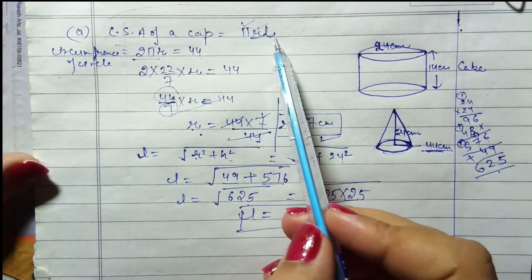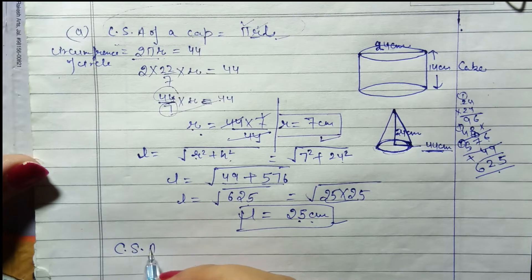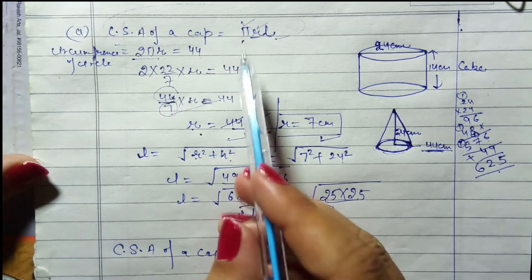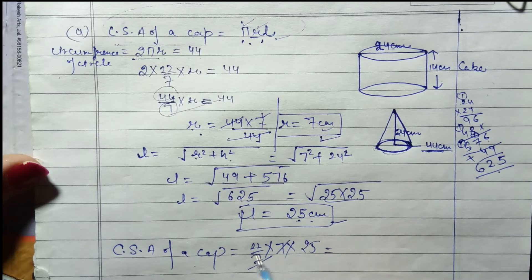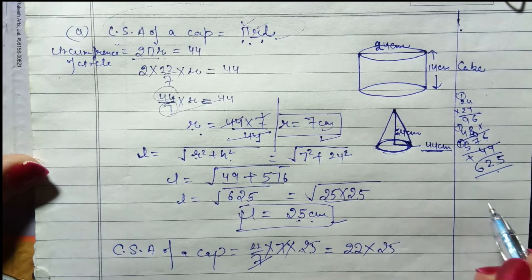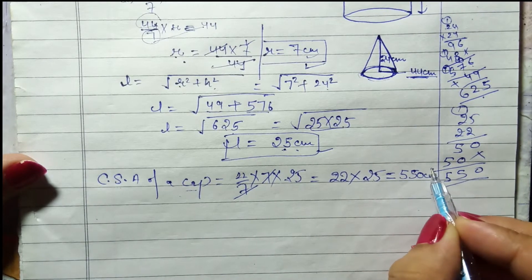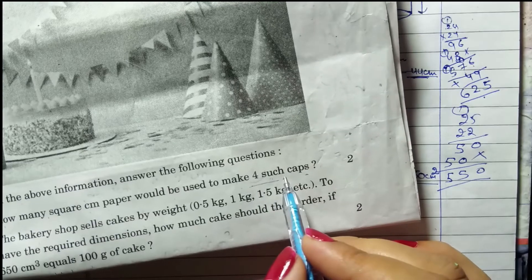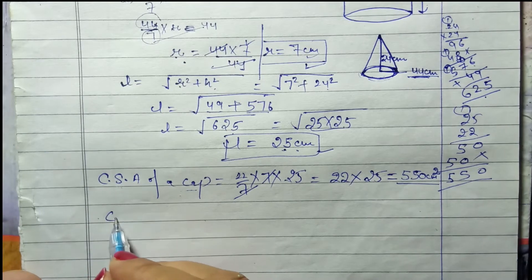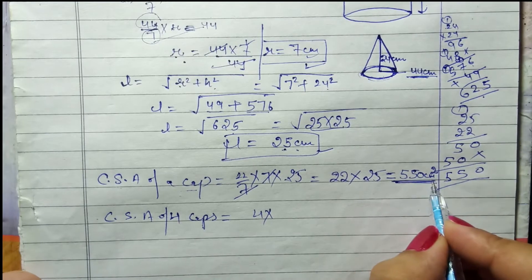Ab hum curved surface area of cap easily nikal sakte hain. Curved surface area of a cap = π × r × l = (22/7) × 7 × 25. 7 se 7 kat gaya, hamare paas bacha 22 × 25. Ek cap ka curved surface area 550 cm² aa raha hai. Aur humein kitni caps ka curved surface area nikalna hai? 4 caps ka. So curved surface area of 4 caps = 4 × 550.